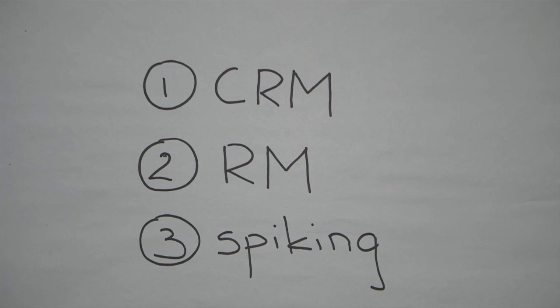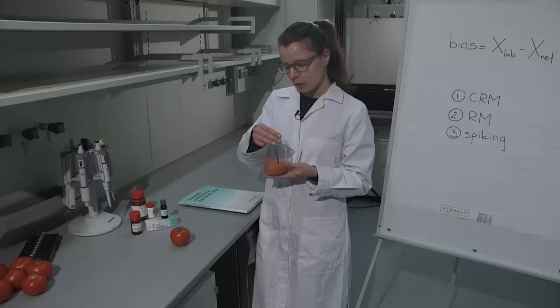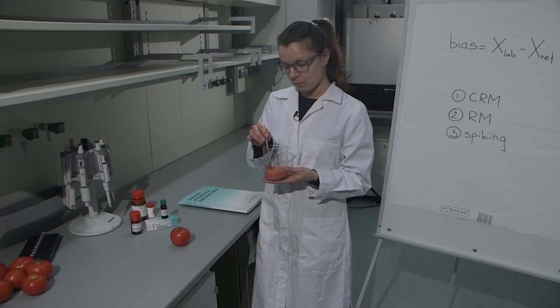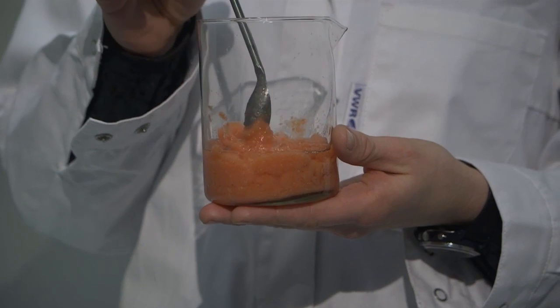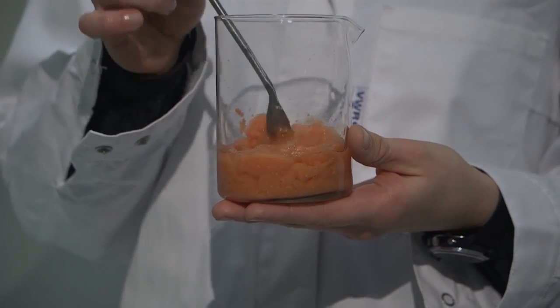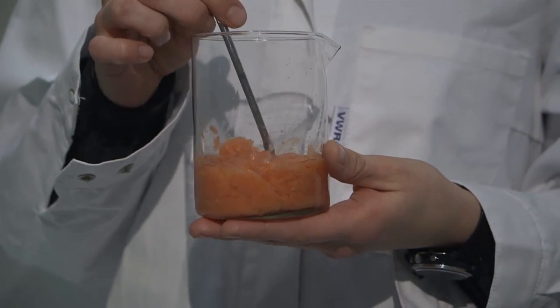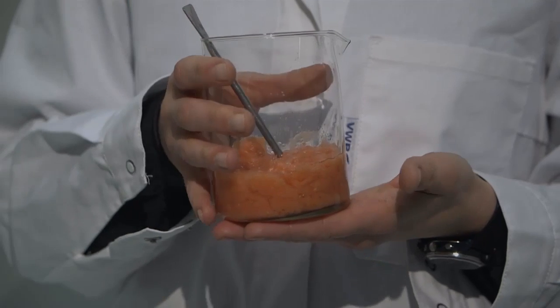Therefore, the second option is a reference material. Reference material means that you have a tomato sample that doesn't have a certain uncertainty. Usually it means that it is somewhat of a leftover from proficiency testing and it has a value that different laboratories have acquired.